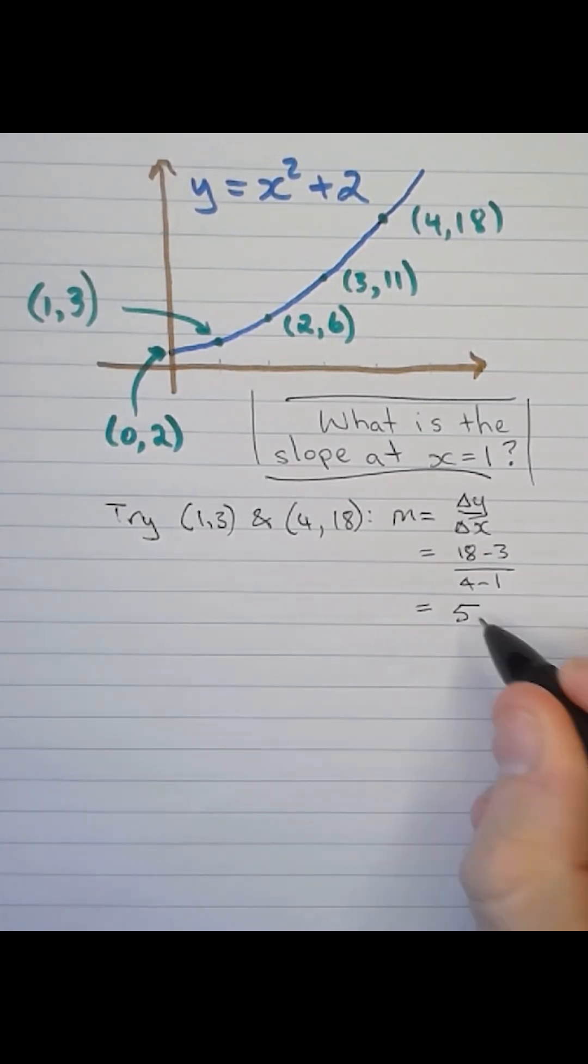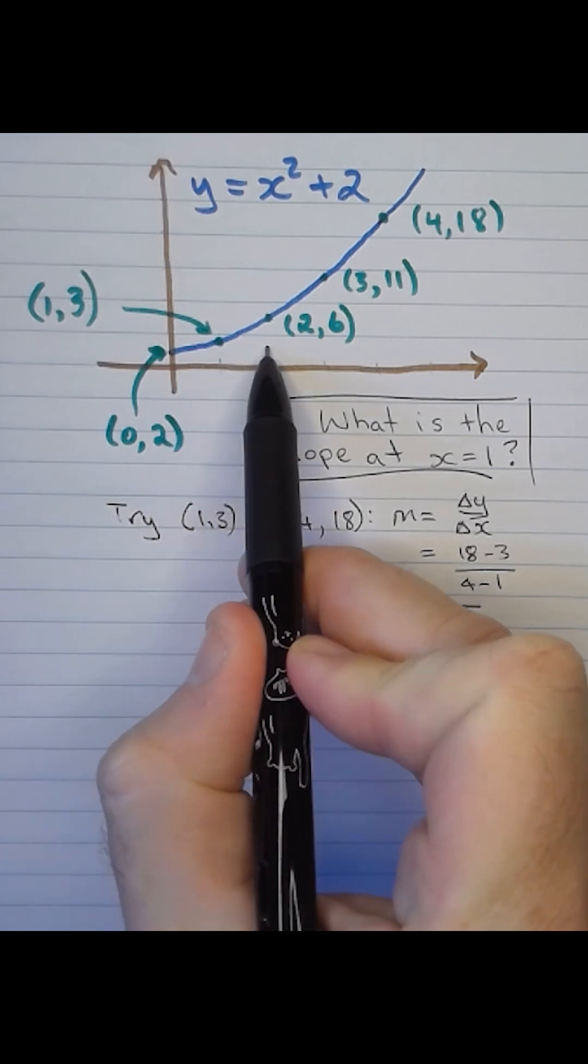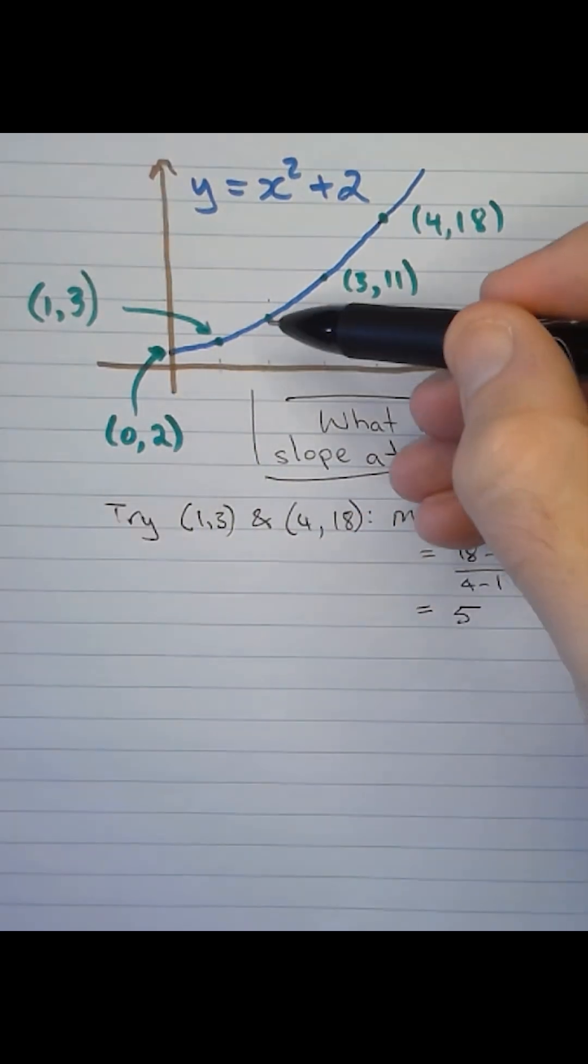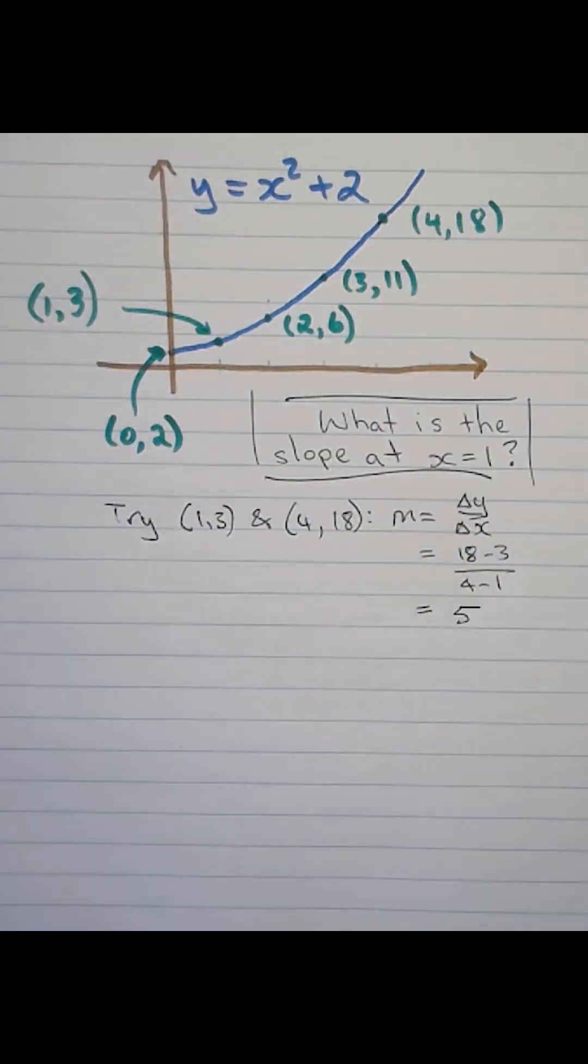That means if you go across one unit from x equals 1, you'll go up 5 units in the y direction. We've got (2, 6) as our next coordinate, one unit across.